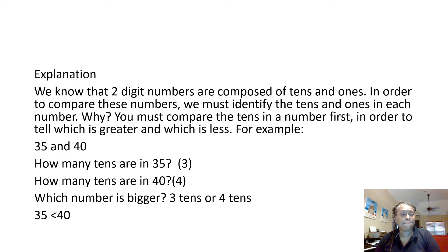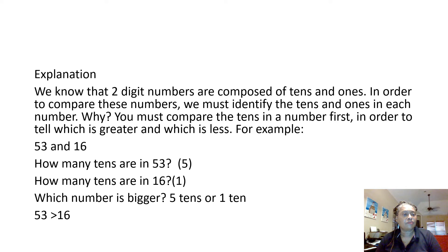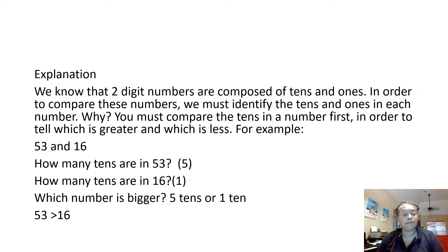Let's look at thirty-five and forty. How many tens are in thirty-five? Three tens, because there are five ones. How many tens are in forty? Four tens and zero ones. Which number is bigger — three tens or four tens? So thirty-five is less than forty, because three tens is smaller than four tens. Now, fifty-three and sixteen: how many tens in fifty-three? Five. In sixteen? One ten. So fifty-three is greater than sixteen, because five tens is always bigger than one ten.